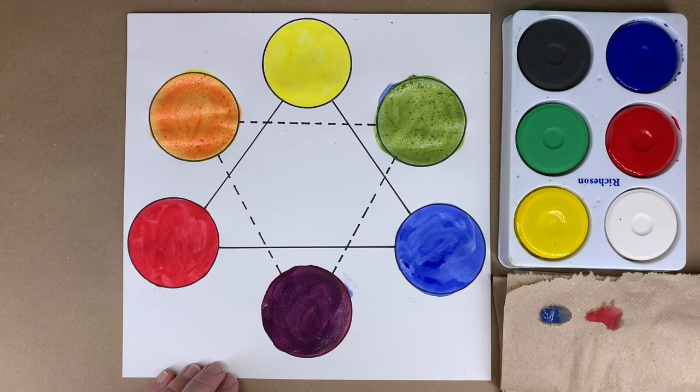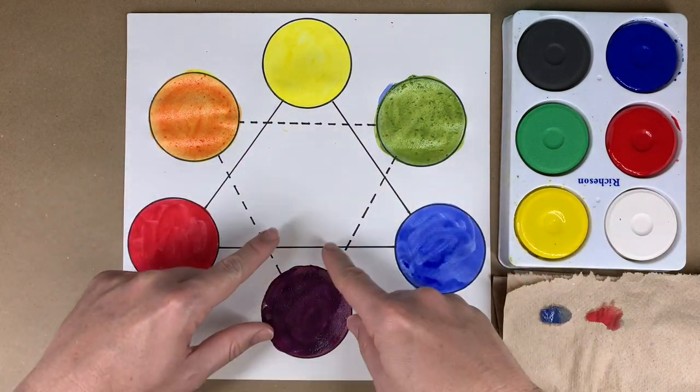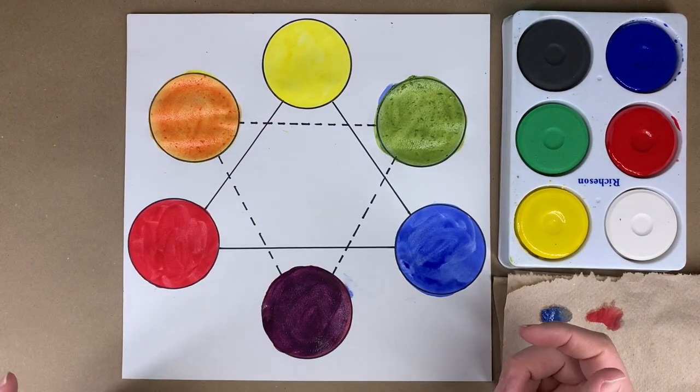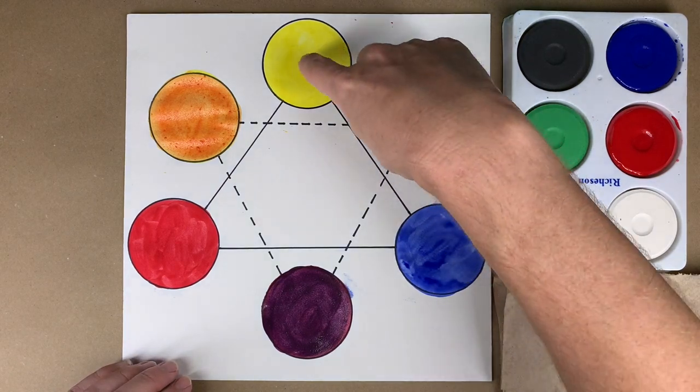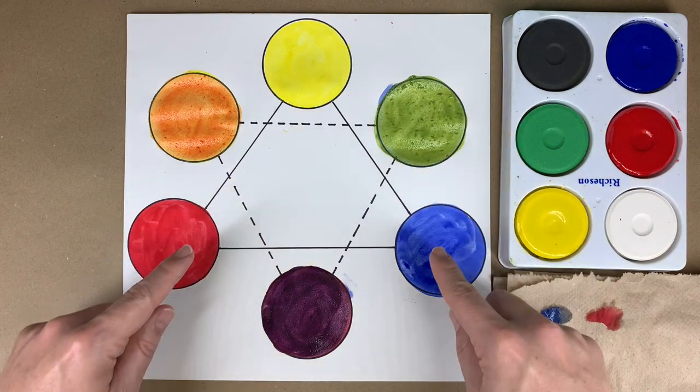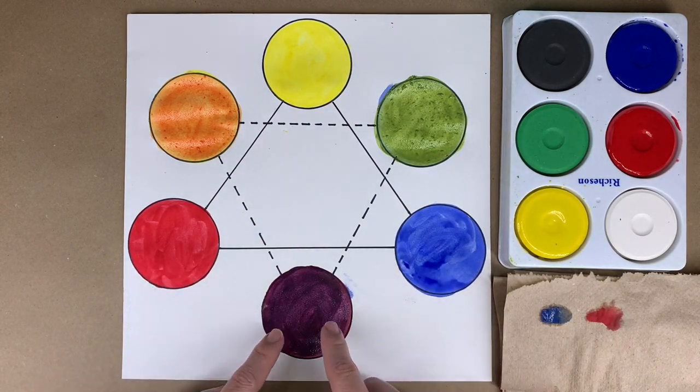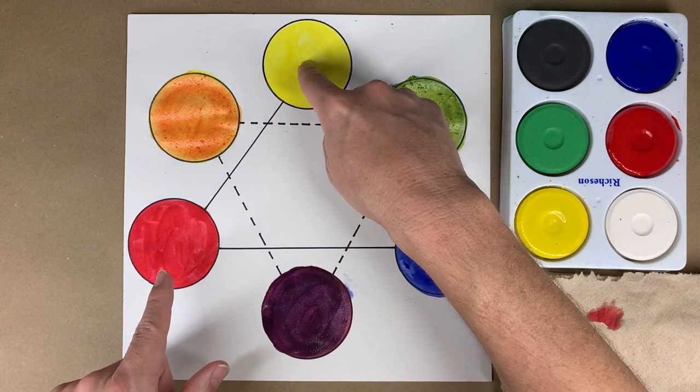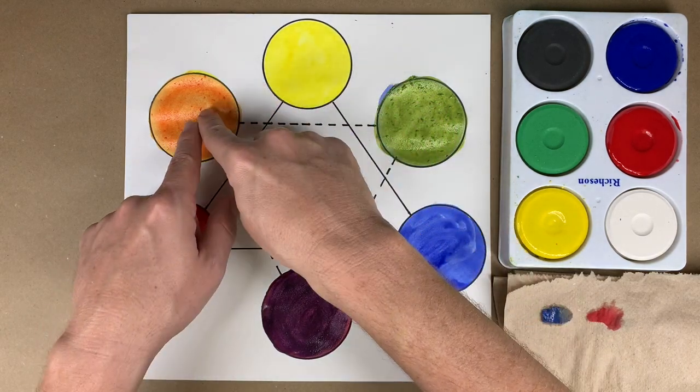So we made the secondary colors by mixing the primaries that are next to it. So that's how the color wheel works. In between yellow and blue, you have green because mixing those together will give you green. Between blue and red, you have purple because mixing these two make that color. And between yellow and red, we have orange.